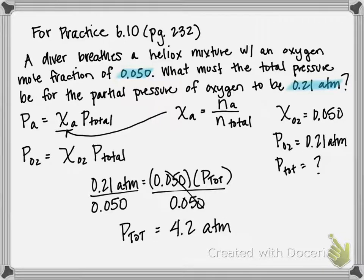So our heliox mixture that divers are going to breathe needs to have a total pressure of 4.2 atmospheres in order for oxygen to maintain its partial pressure of 0.21 atmospheres.